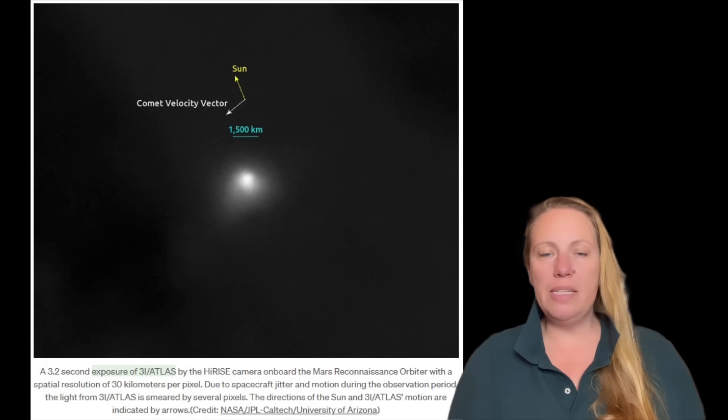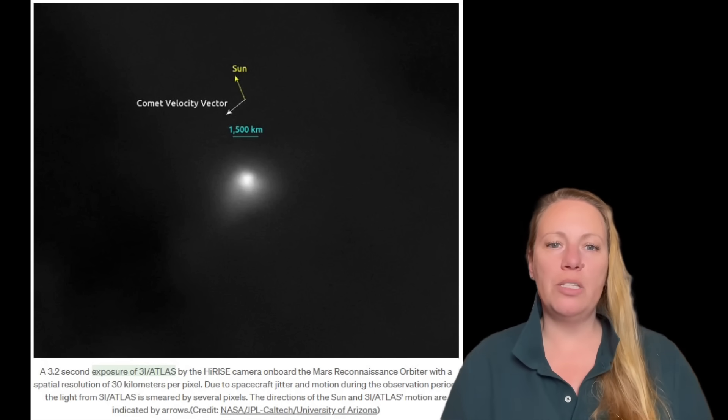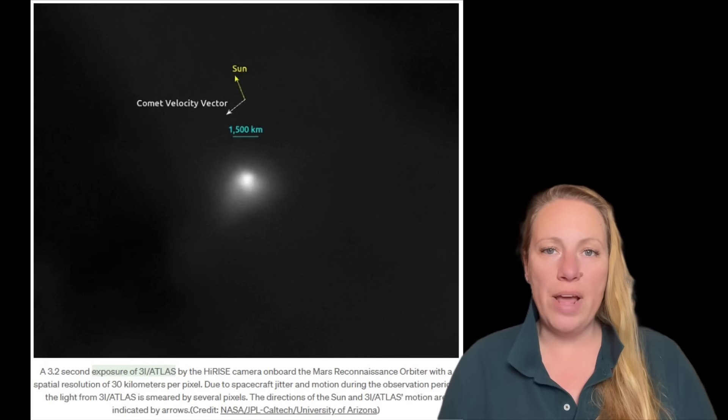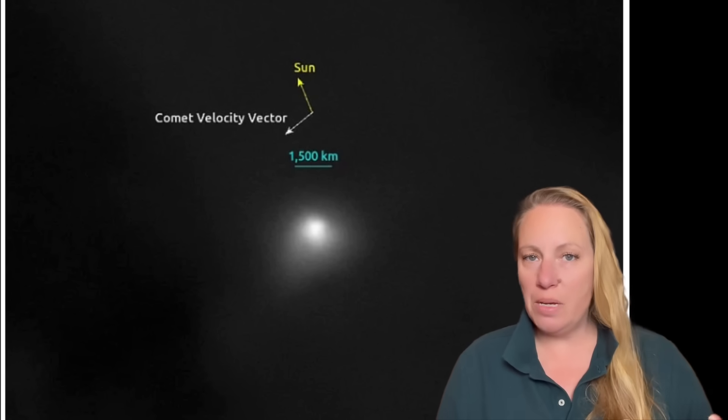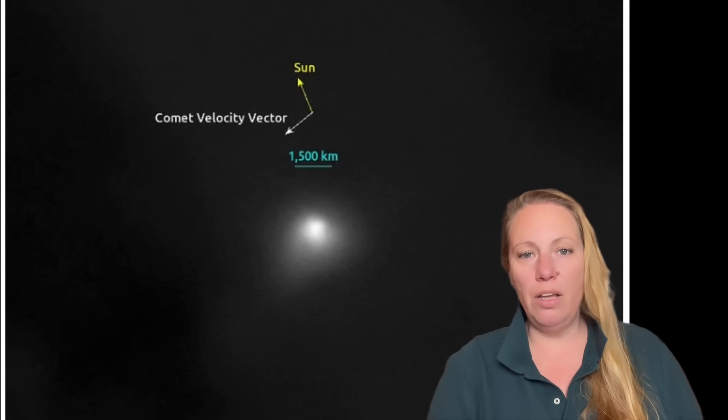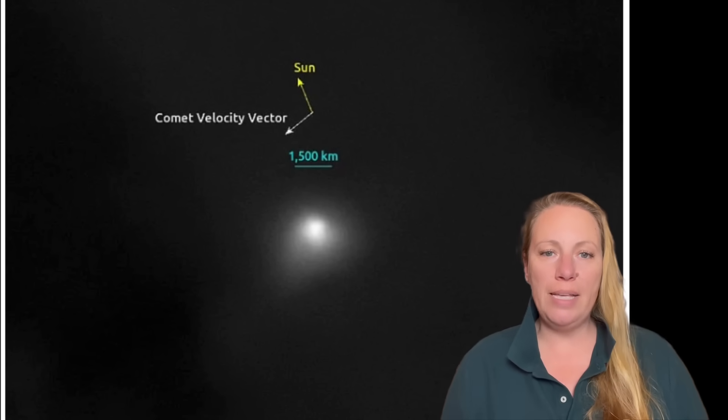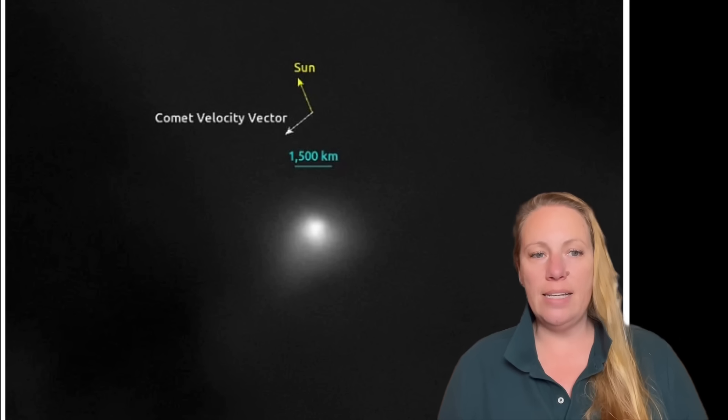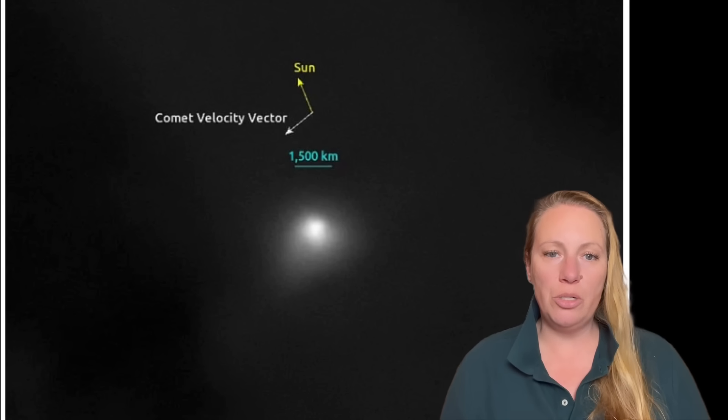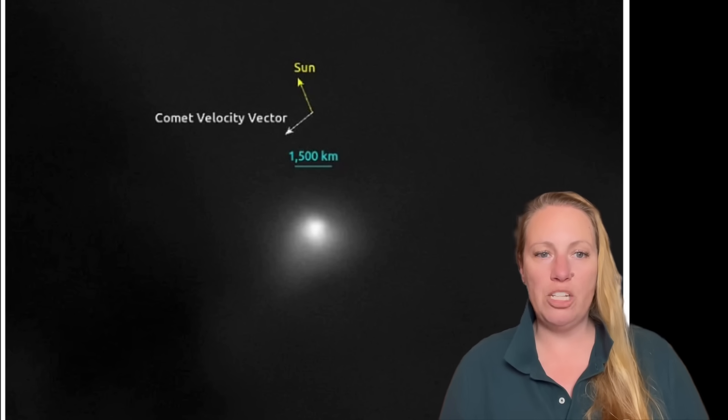They said about these images that were taken on board the Mars Reconnaissance Orbiter, they were taken already on October 3rd. As you see them here, I'm showing them right here. Fuzzy ball of light image features a spatial resolution of 30 kilometers per pixel at 3i Atlas' distance of about 30 million kilometers. And there is spacecraft jitter during this observation period. So the light that's coming from 3i Atlas, when you look at the pictures, is somewhat smeared by several pixels. But that's coming from the reconnaissance orbiter.